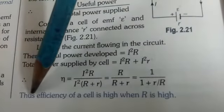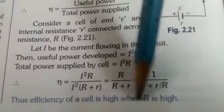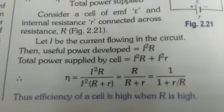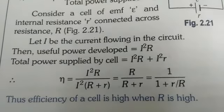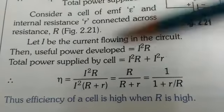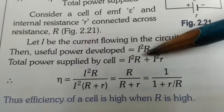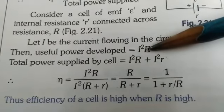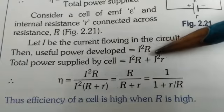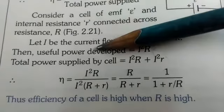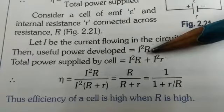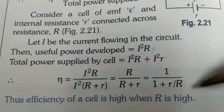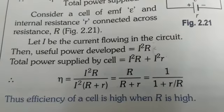So, we can conclude one thing that efficiency of cell is high when R is high. That means, external resistance should be high. Because in formula of power, you can see it is I square R. Useful power is I square R, which only depends on external resistance. So, if external resistance is more, the useful power will be more. And from efficiency equation also, you can see, if R is high, then only efficiency will be high.